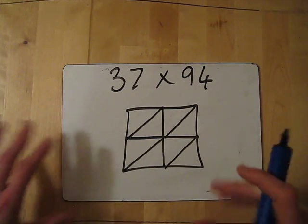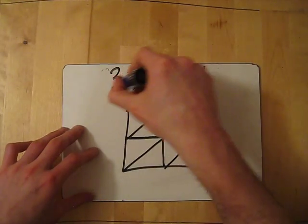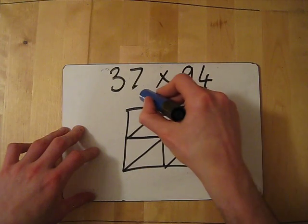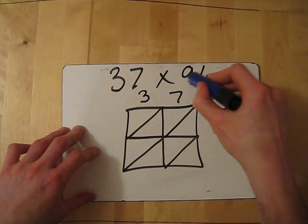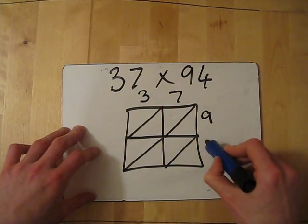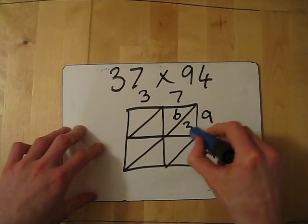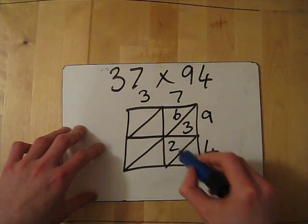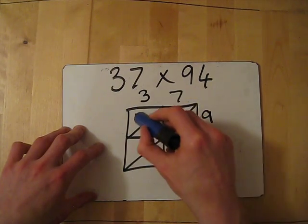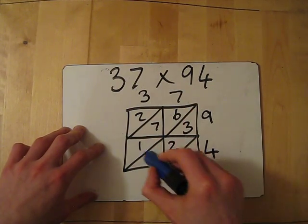Okay, hopefully you've paused it. So, remember you just write the individual numbers. So, I'll write 37, 94. And 7 times 9 gives me 63. 7 times 4 is 28. 3 times 9, 27. 3 times 4 is 12.